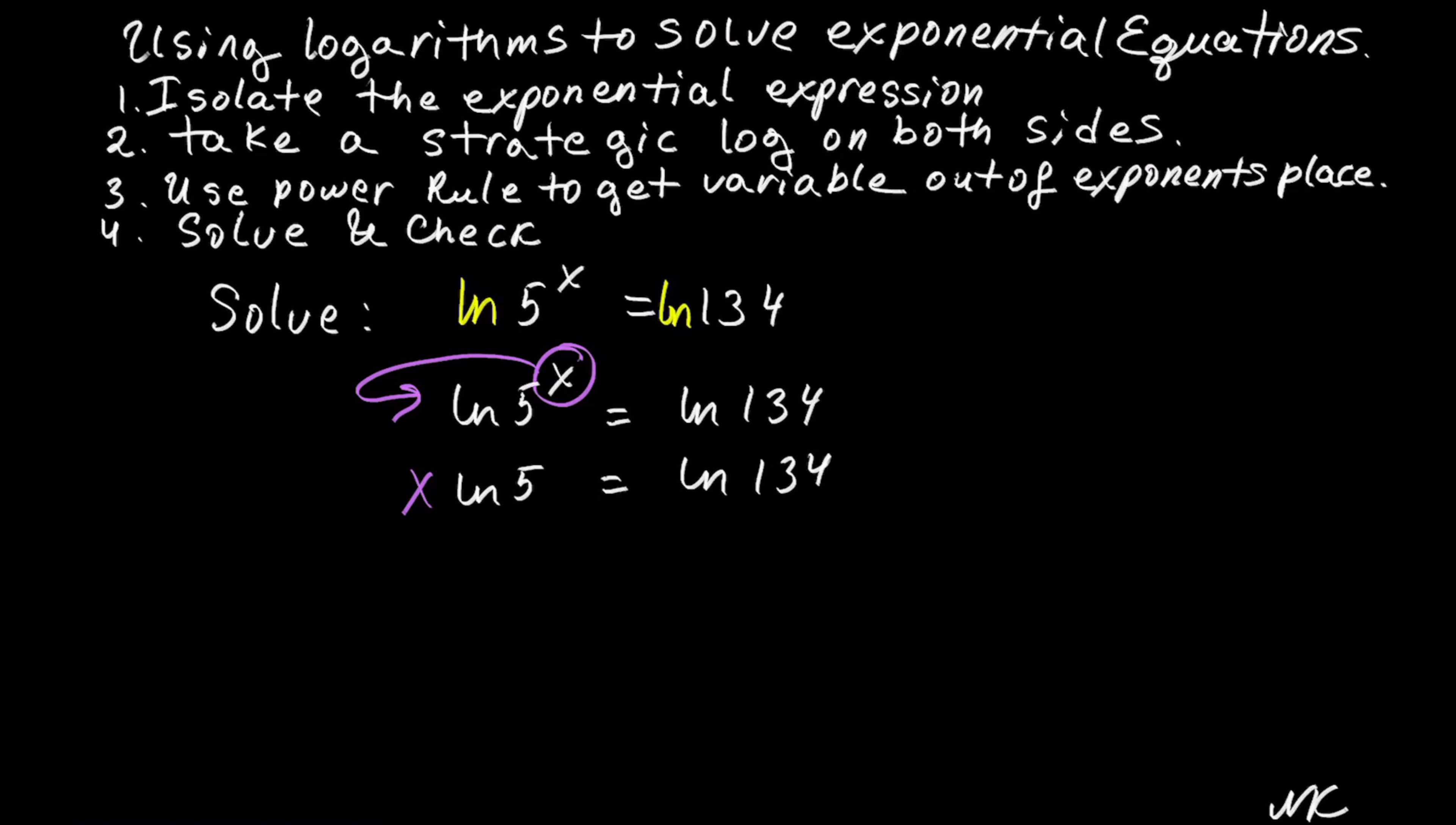Remember that x is the variable and ln is a number. So we are solving for x, so let's do the inverse of multiplying by ln of 5 by dividing by ln of 5 and let's do the same thing on both sides.